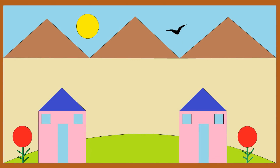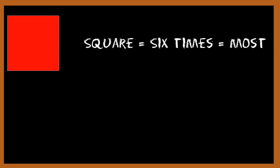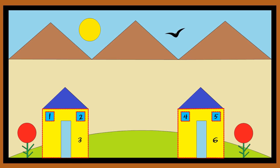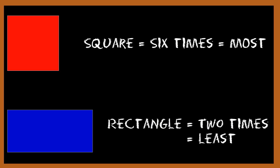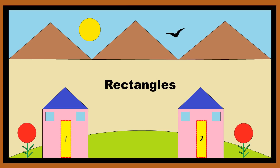Children, please note that the square shape has come the most number of times, i.e. six times. And the rectangle shape has come the least number of times, i.e. two times.